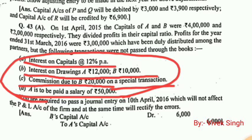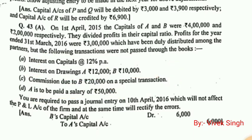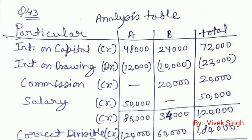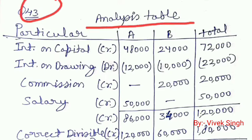To rectify this mistake, we need to pass a single journal entry. We have to identify which amount should be transferred in that single entry. For this we go through the solution. First, we prepare an analysis table with columns for partner A, partner B, and total.